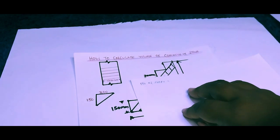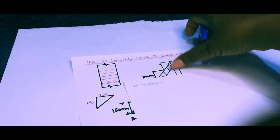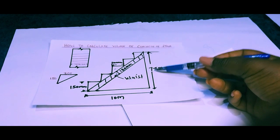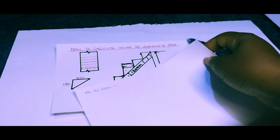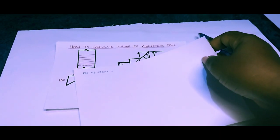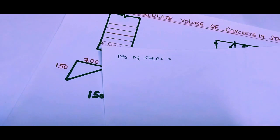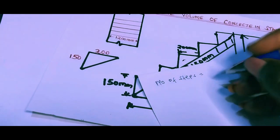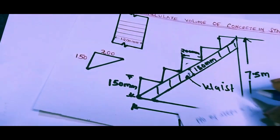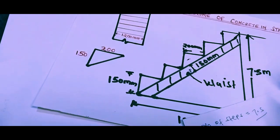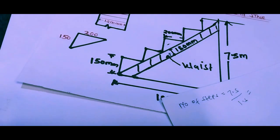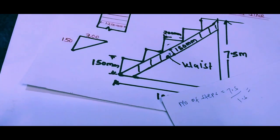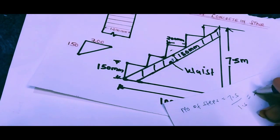The number of steps equals the height of the stair, which is 7.5 meters, divided by the height of the riser, which is 150 millimeters. That is 7500 divided by 150, which gives us 50 — so the number of steps is 5. Wait, tabulating that, the number of steps comes out as 5.